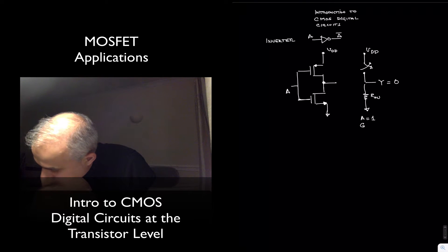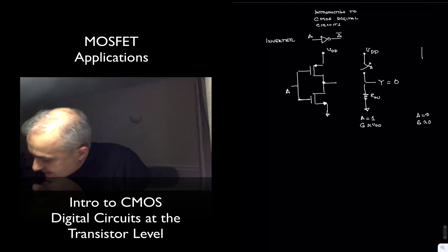That means that the gate is at a high voltage, approximately equal to VDD, and for A equals zero, meaning the gate is approximately equal to zero, what we have is that the PMOS is conducting, is ON.